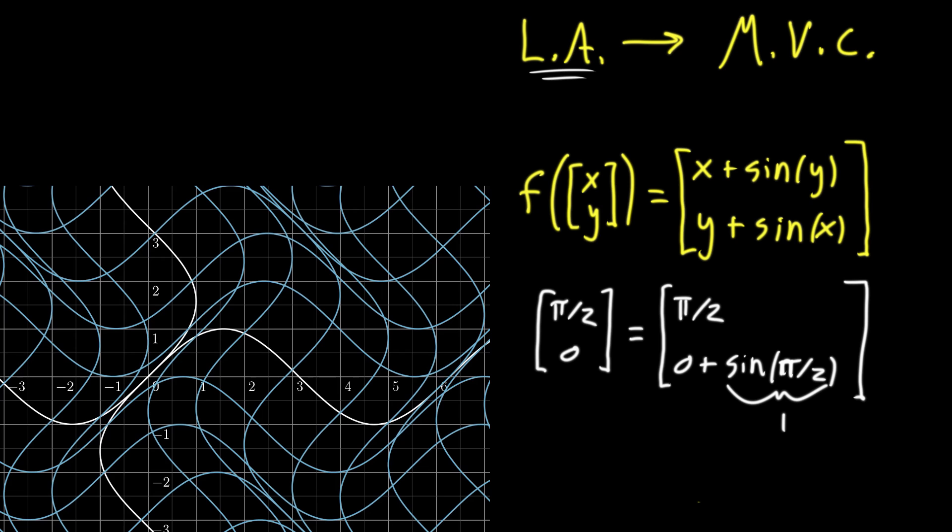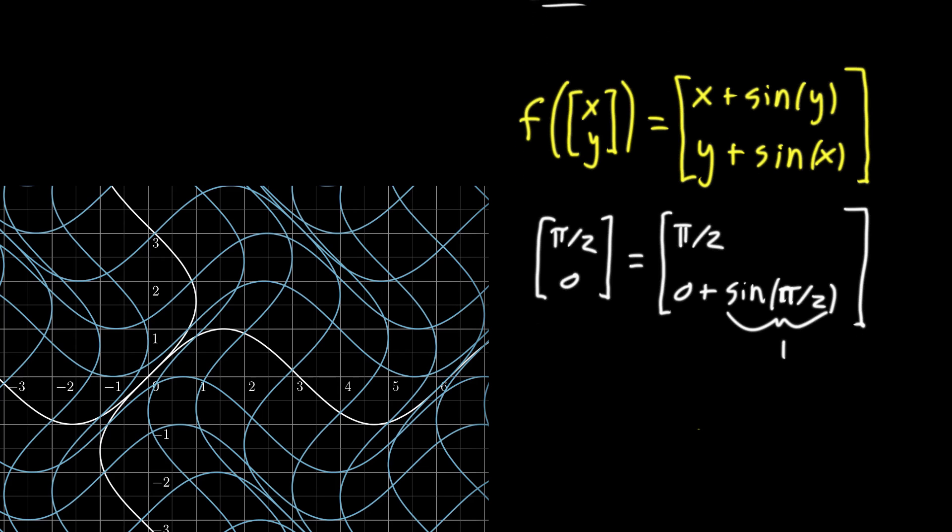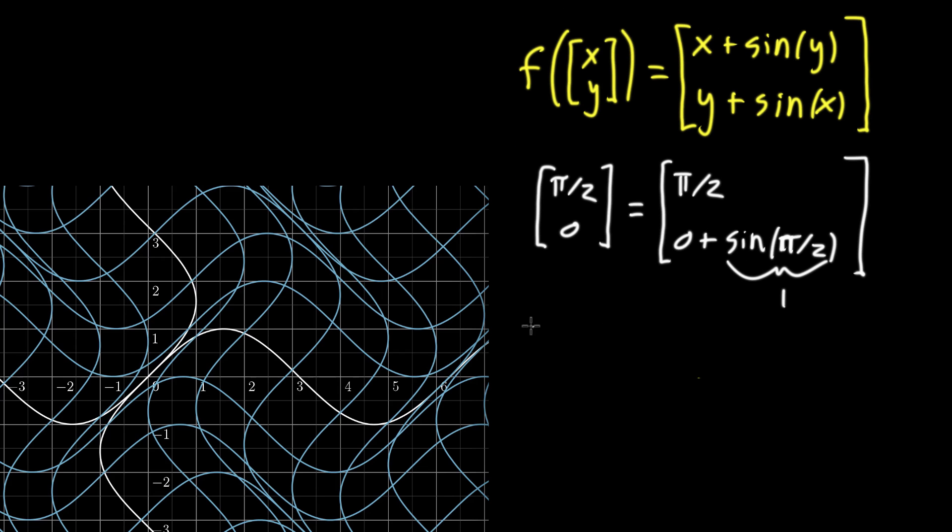But this function has a nice property. A property that we deal with all the time in multivariable calculus. It's what we call locally linear.